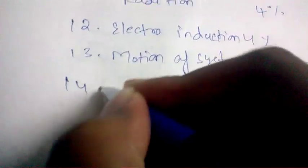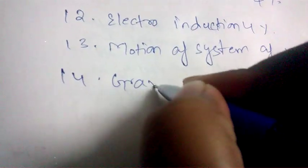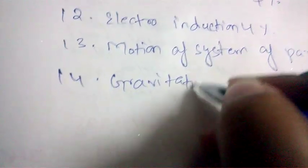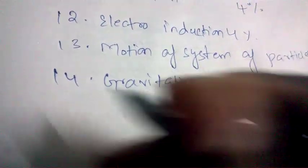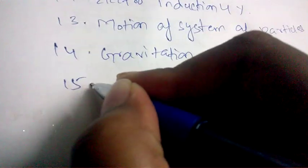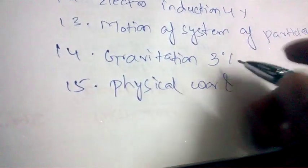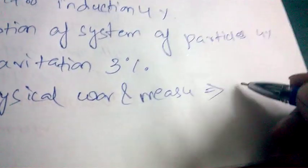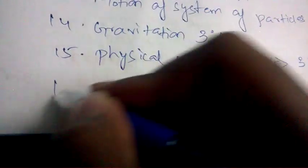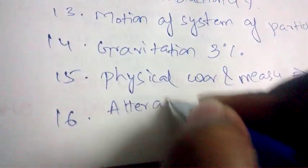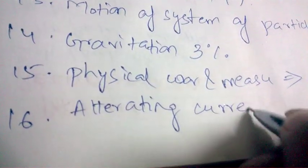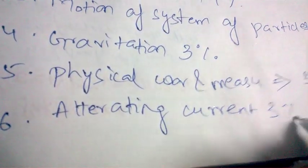Gravitation carries 3% of questions. Physical World and Measurement also carries 3% of questions. Last but not least, Alternating Current also carries 3% of questions in the physics question paper.